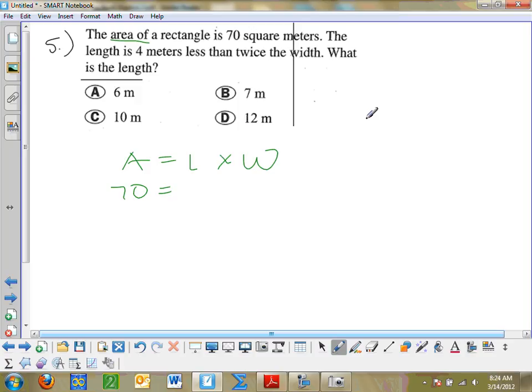The length over here, the length is 4 meters less than twice the width. When you have that less than, make sure you put that at the end. We've got to subtract that from something. So 4 meters less than twice the width would be 2 times the width. So that is what I'm going to substitute for the length. The length is 2w minus 4. So I've got to go ahead and do that right here. Instead of the length, I'm going to put 2w minus 4 times the width.